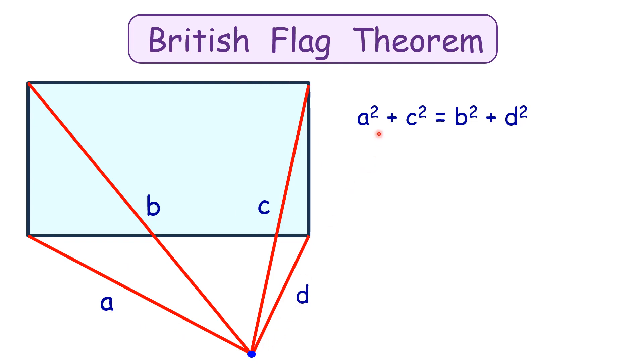Then they hold the relation a² + c² = b² + d², where a and c are the distances from opposite vertices. We have discussed the proof of this theorem in video number 72. For those interested, I will post a link in the description.